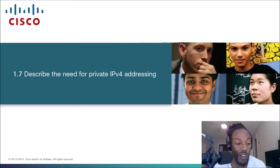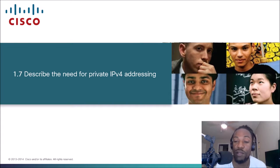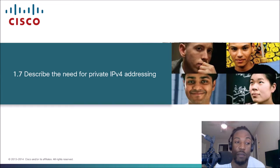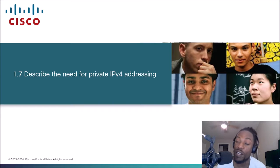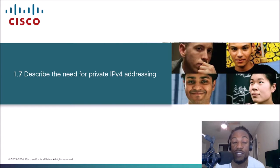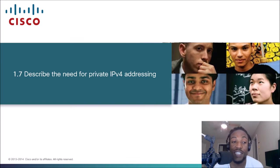You are now tuned into The Network, the YouTube channel that takes complex networking topics and dumbs them down to simpler language. Today's topic is describing the need for private IP addressing. This is a topic in the CCNA exam — topic number 1.7.